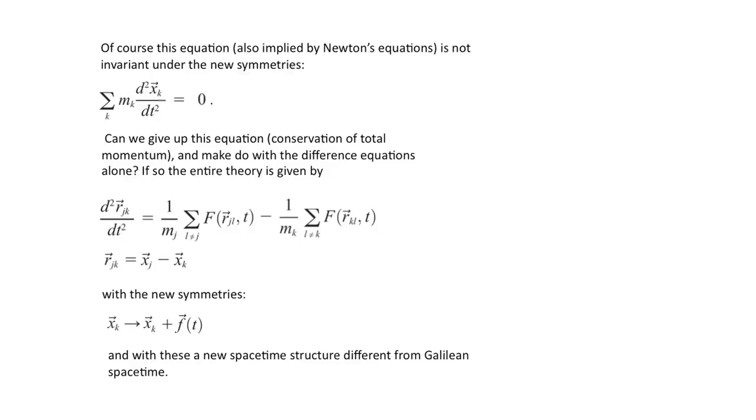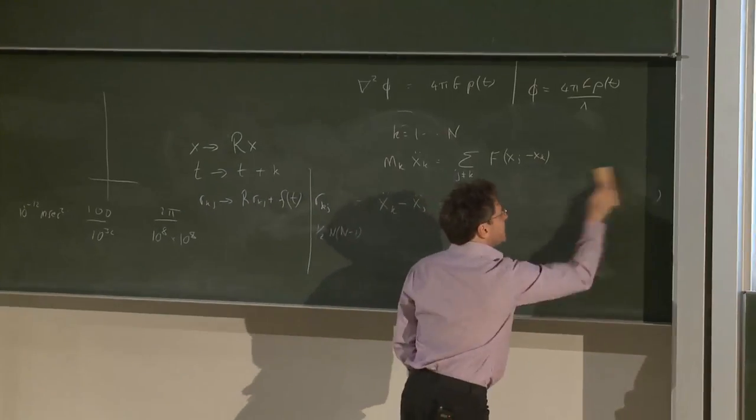We can add arbitrary functions of the time to the rkj's. Of course, this equation is no longer preserved under that symmetry. So if we can give up this equation, if we can work only with these equations, then we've got a different space-time structure. We have different symmetry groups involved. So that is the suggestion, that the correct space-time structure, not just for Newton's Principia, but for the whole of classical mechanics, is indeed one whose symmetry group is given by this. And I want to give an idea of what that space-time looks like.